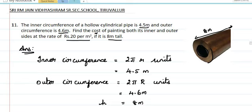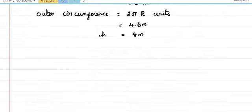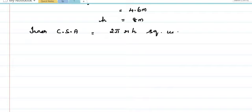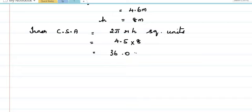First, let us find out the area that needs to be painted. Let us find what is the inner curved surface area and what is the outer curved surface area. Inner curved surface area equals 2π small r h square units. They have already given 2πr as 4.5, and height is given as 8. When I multiply: 8 × 4.5 — 8 fives are 40, 8 fours are 32 plus 4 — equals 36 meter square.